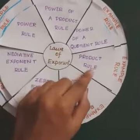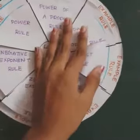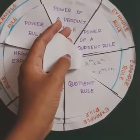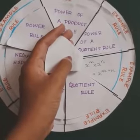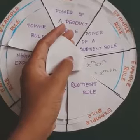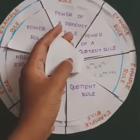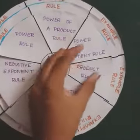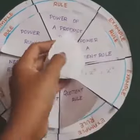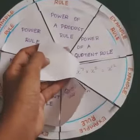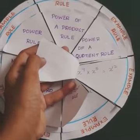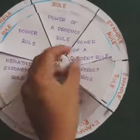Next is the product rule. Its rule is: x^m × x^n = x^(m+n). An example is x^7 × x^5 = x^12.